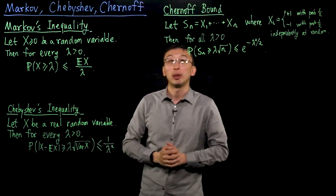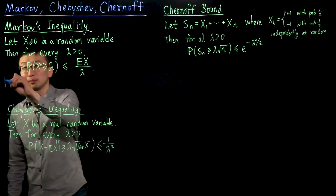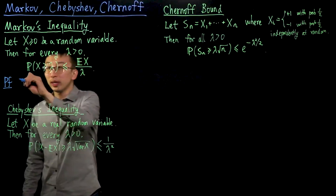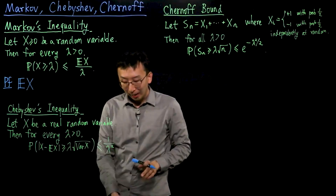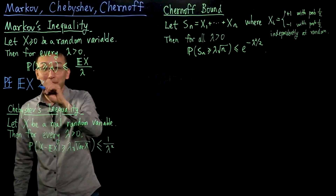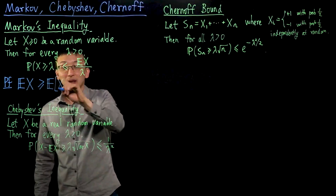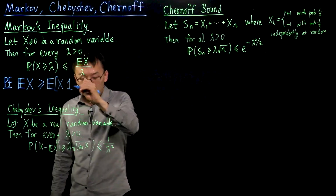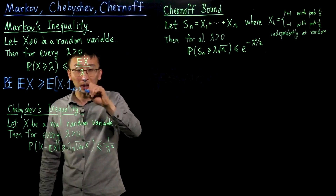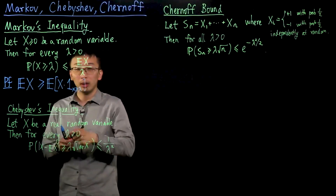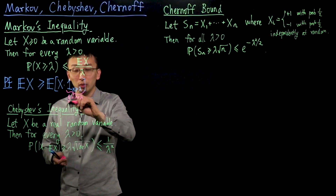This is a very important and useful inequality, and let us prove it. The proof is quite short. We can start with the expectation of x and rewrite it as at least the expectation of x times the indicator function corresponding to when x is at least lambda — so this is 1 if x is at least lambda and 0 otherwise.